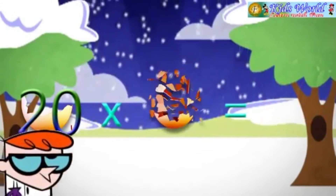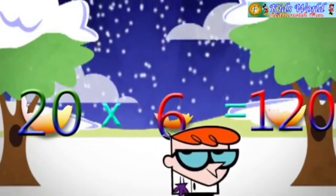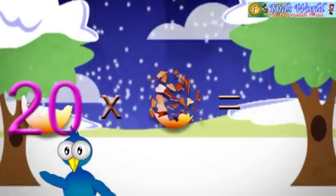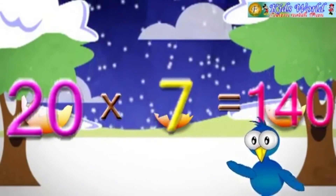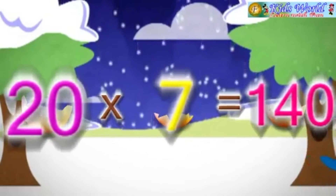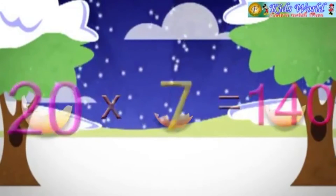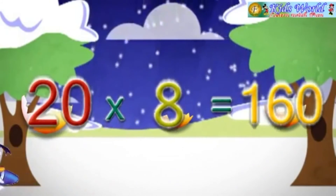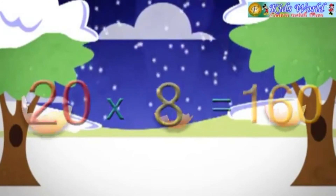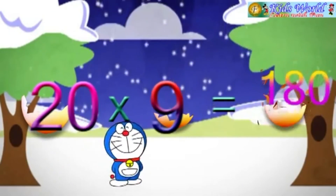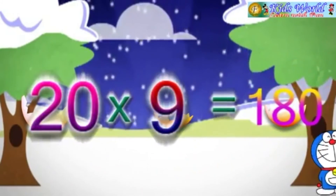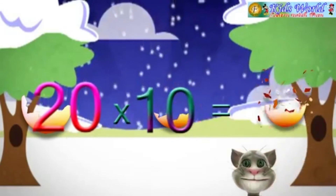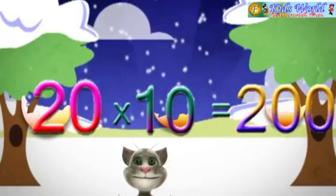20 into 6 is equal to 120. 20 into 7 is equal to 140. 20 into 8 is equal to 160. 20 into 9 is equal to 180. 20 into 10 is equal to 200.